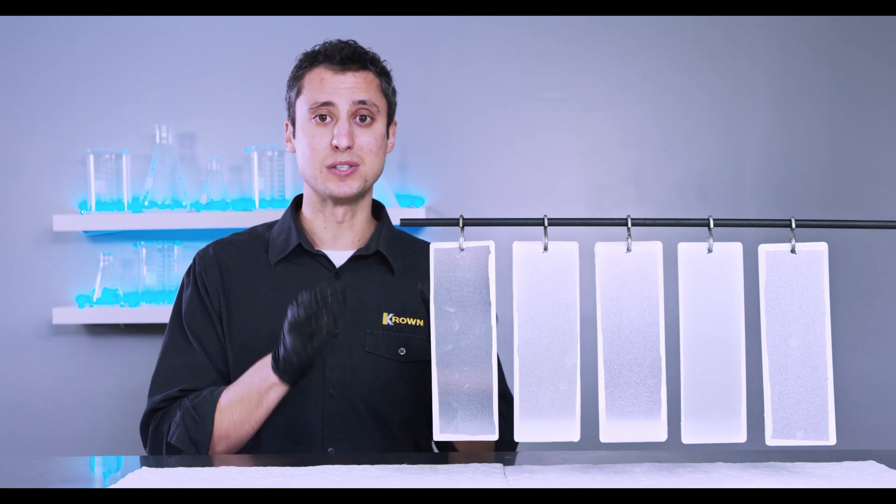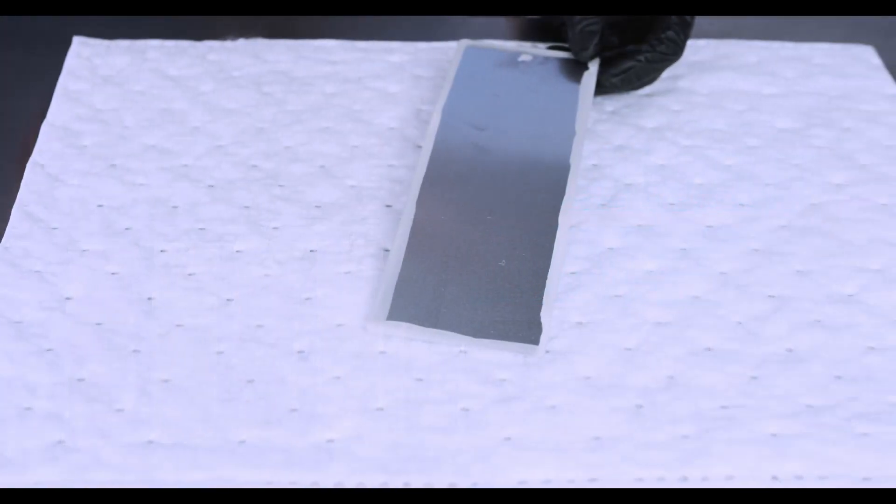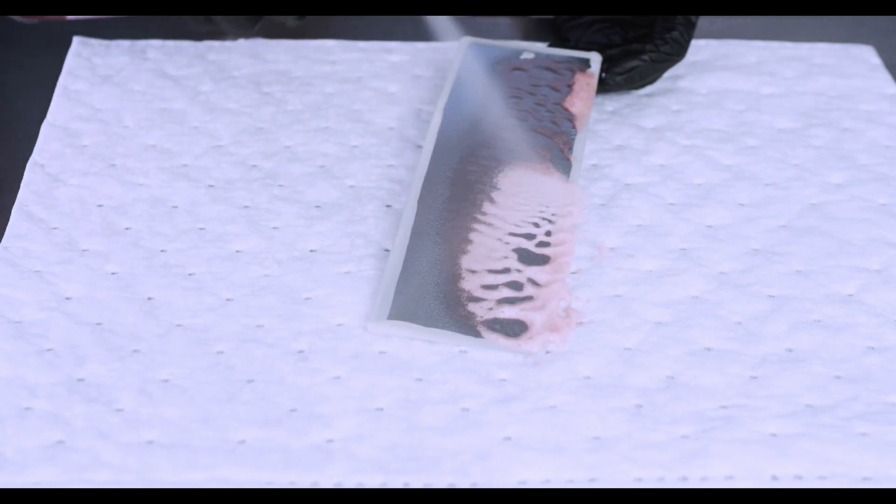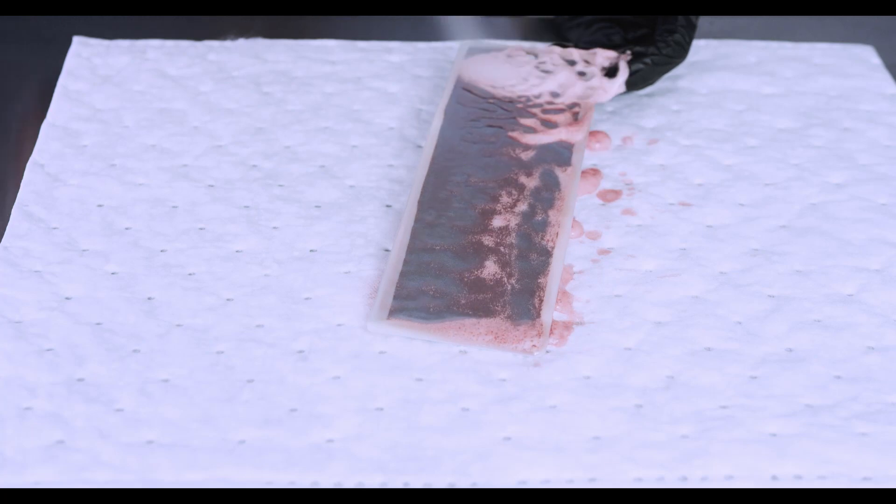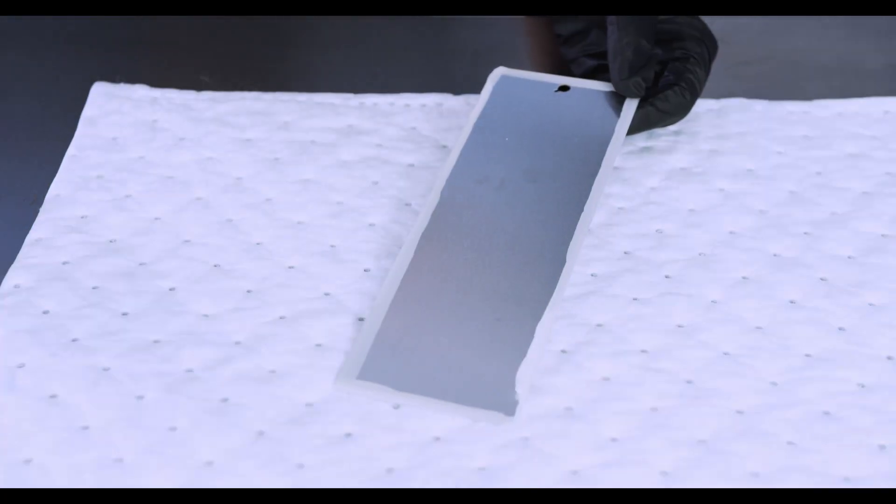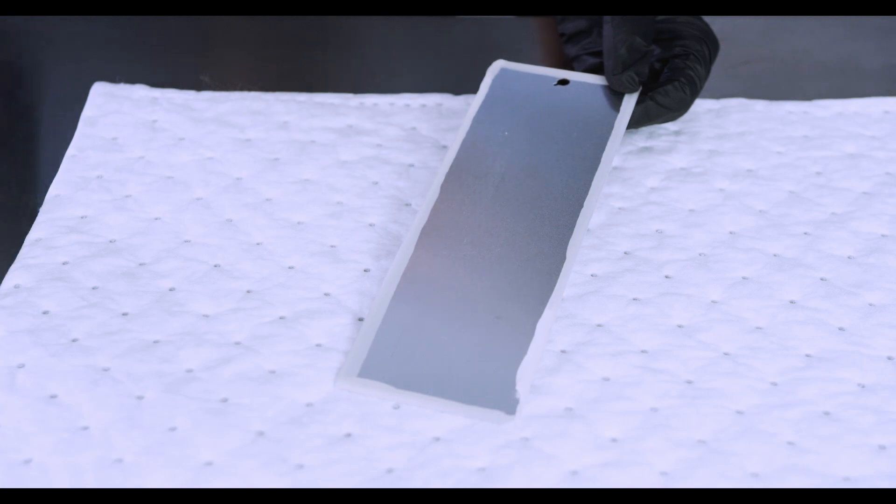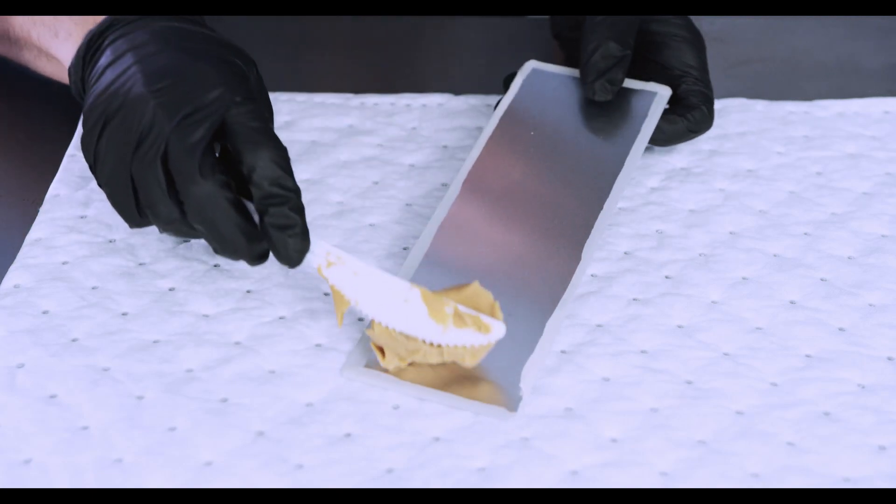So let's apply those different products. Here we're going to apply a very popular oil-based rust protection product. Now to illustrate how something can be a great coating but not necessarily a good rust inhibitor, we're going to apply peanut butter to one of these panels.